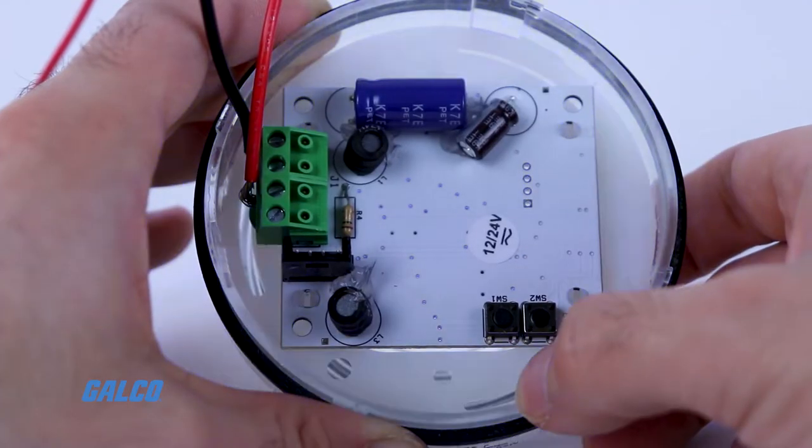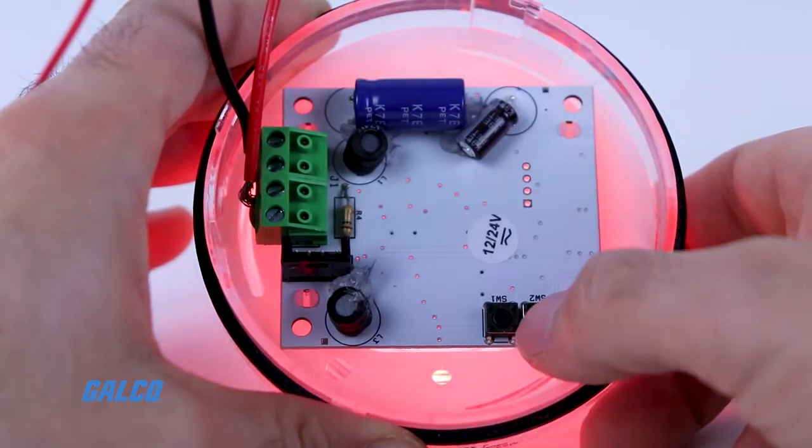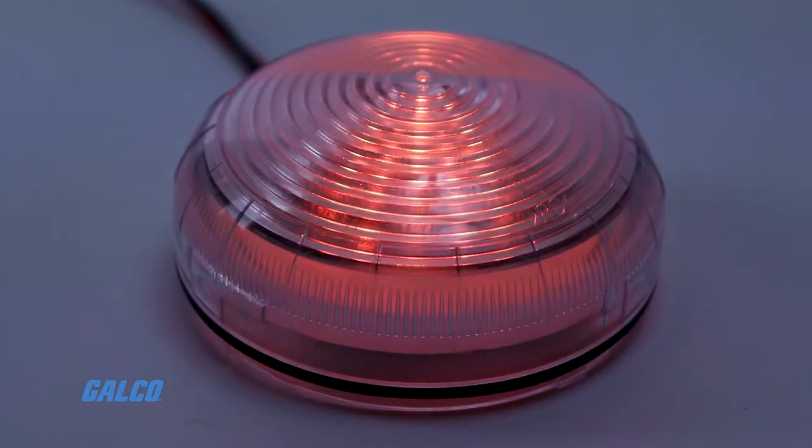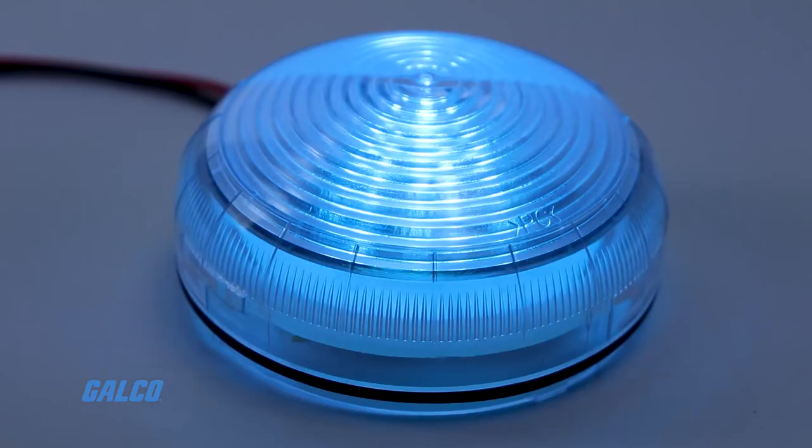Users can customize each channel, selecting from eight different colors and five different light effects including steady, one flash, two flash, four flash, and random.